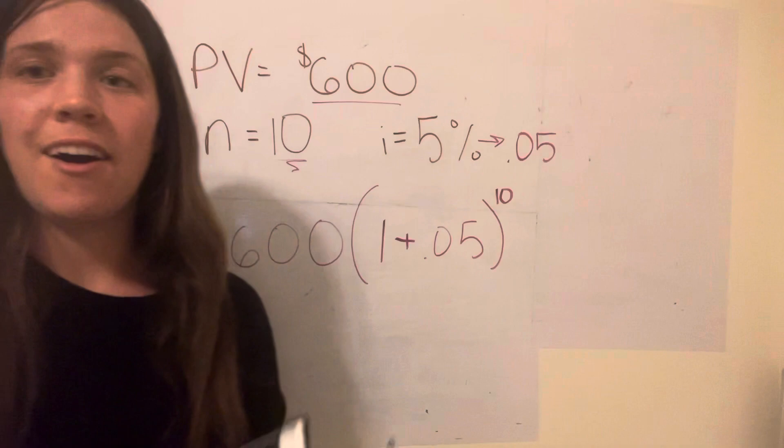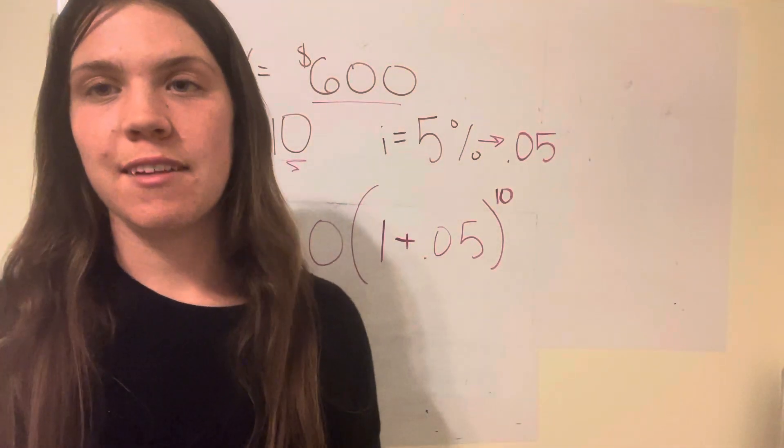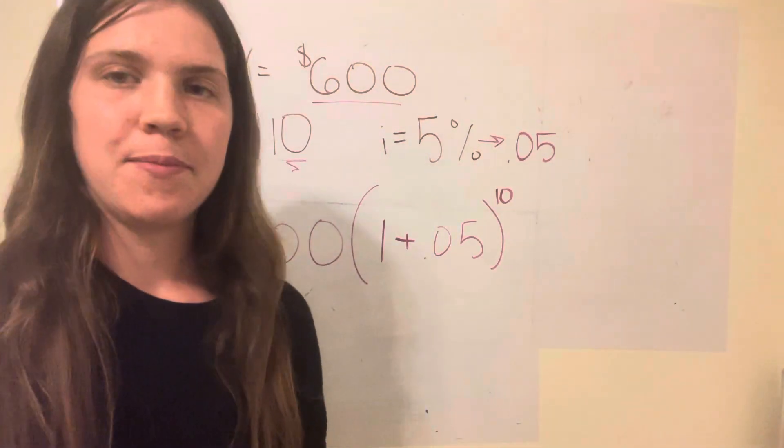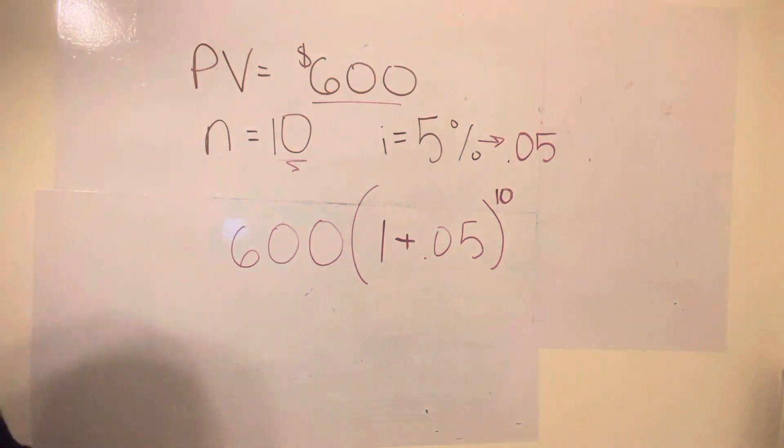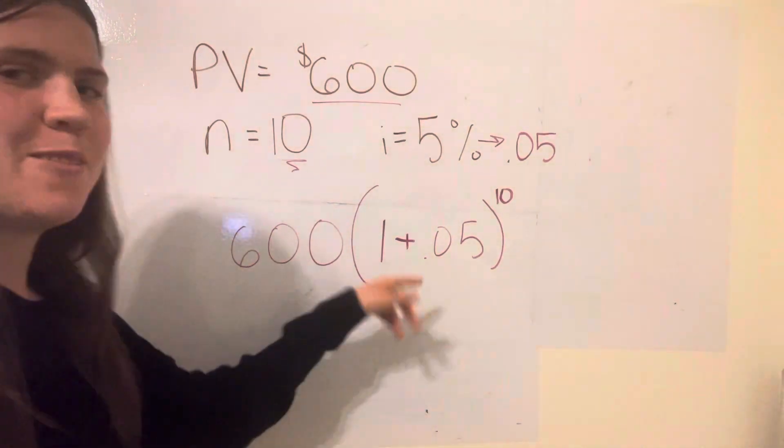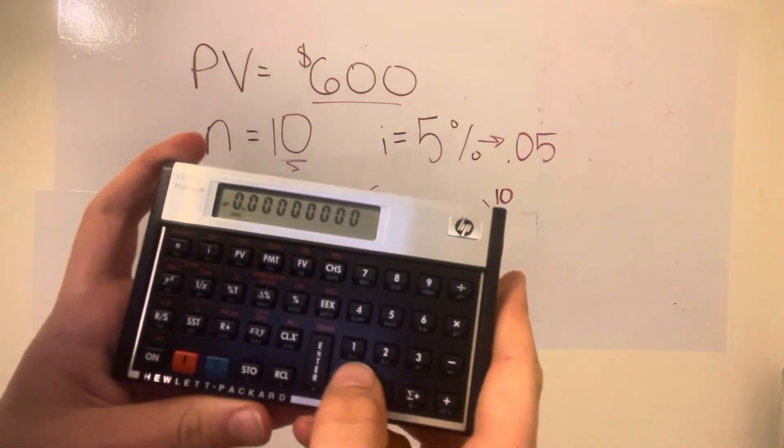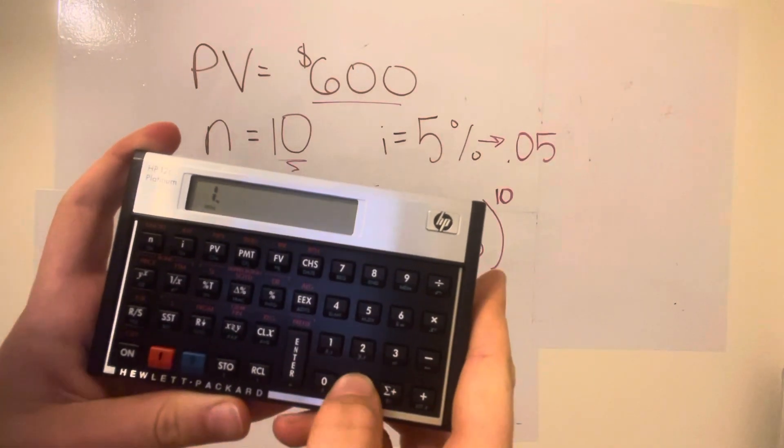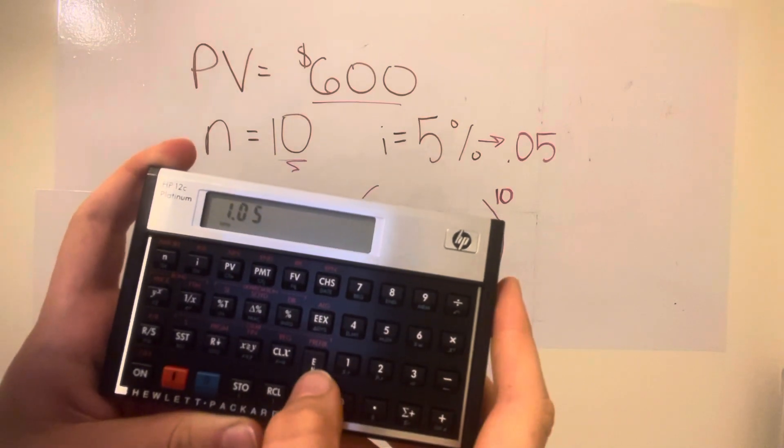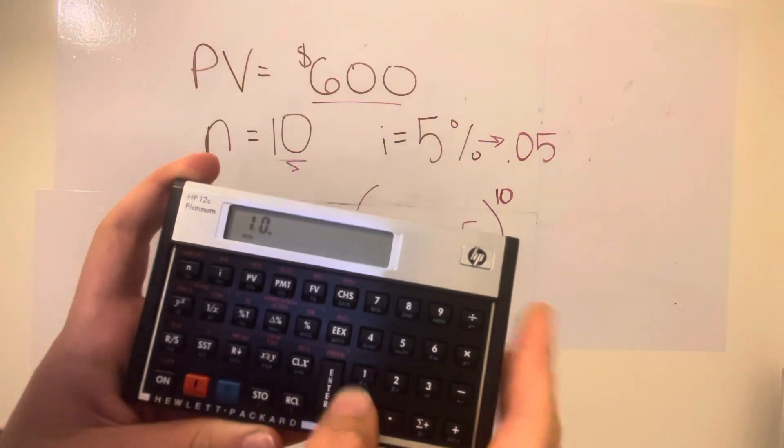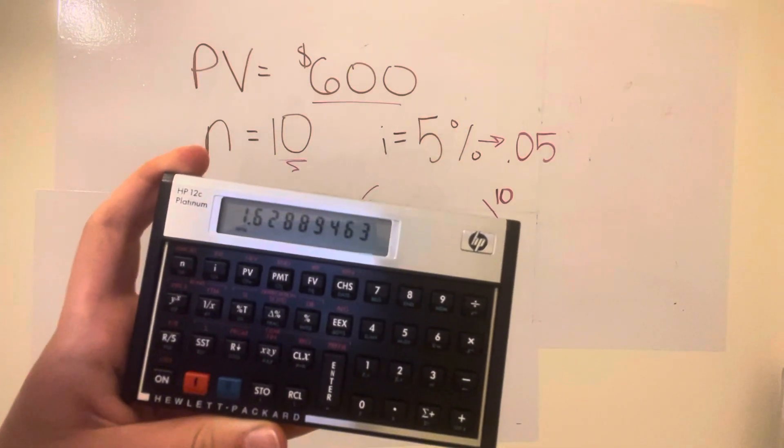And I'll show you how to do it on the financial calculator, but not using the financial calculator menu. So we can add, this is 1.05, but what you're going to do to raise it to that power is enter a number, so 1.05, enter 10, and press this button.